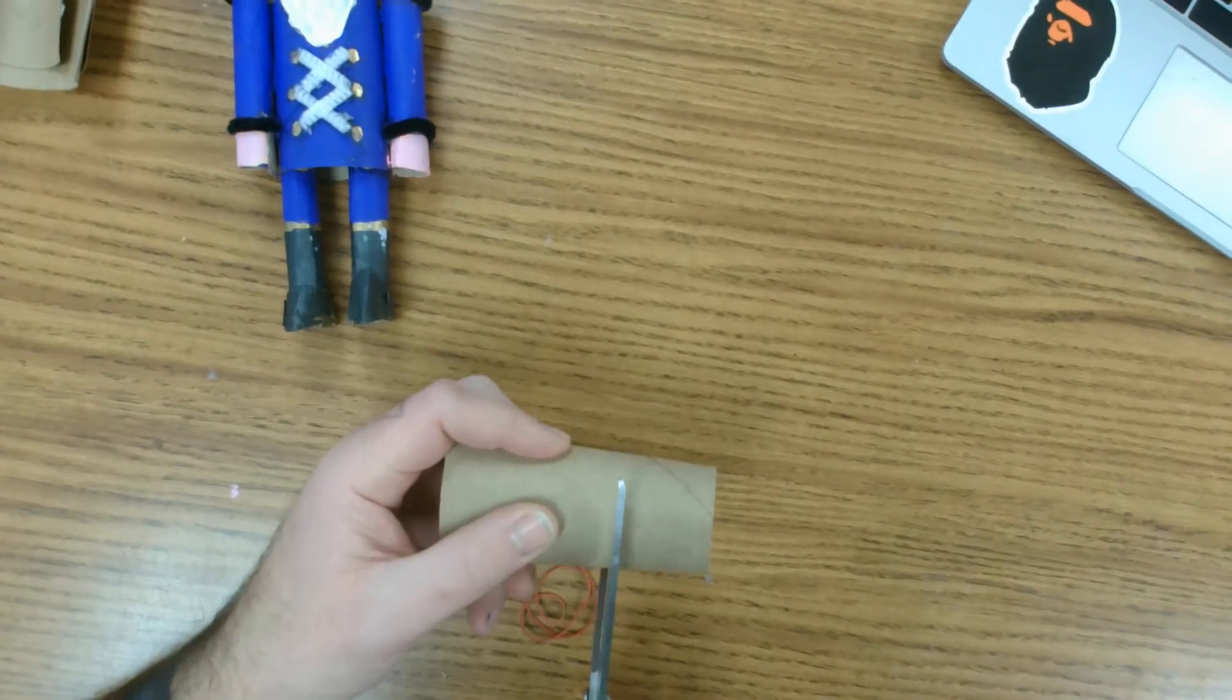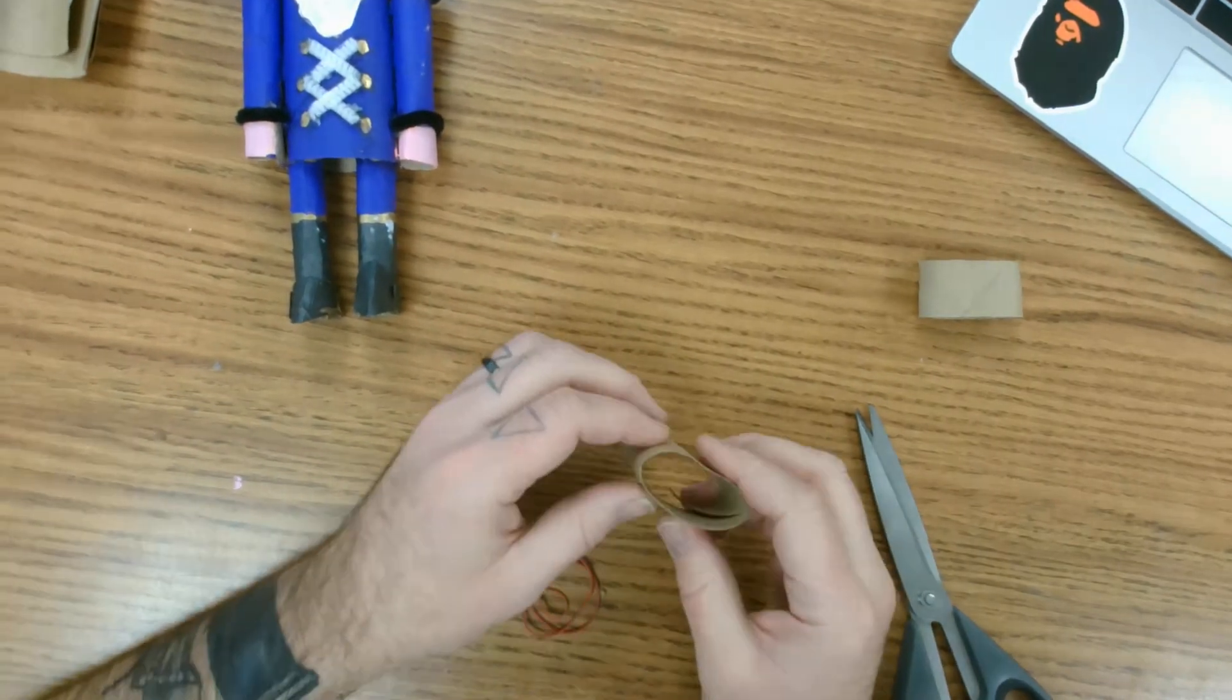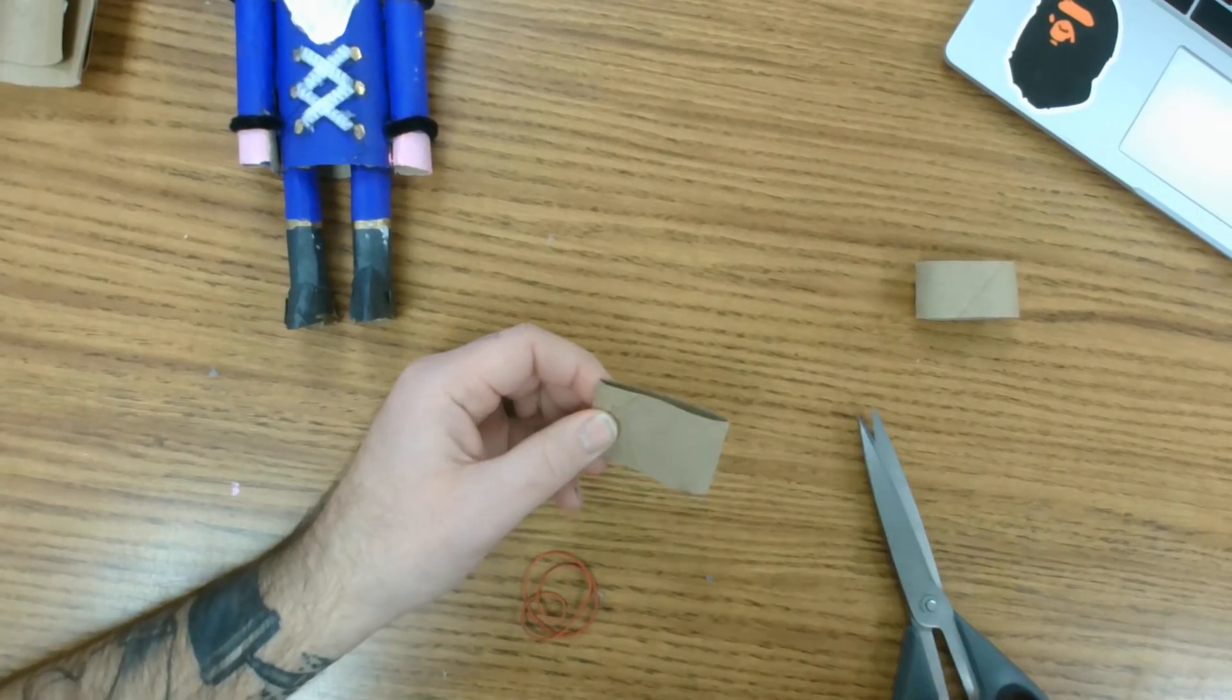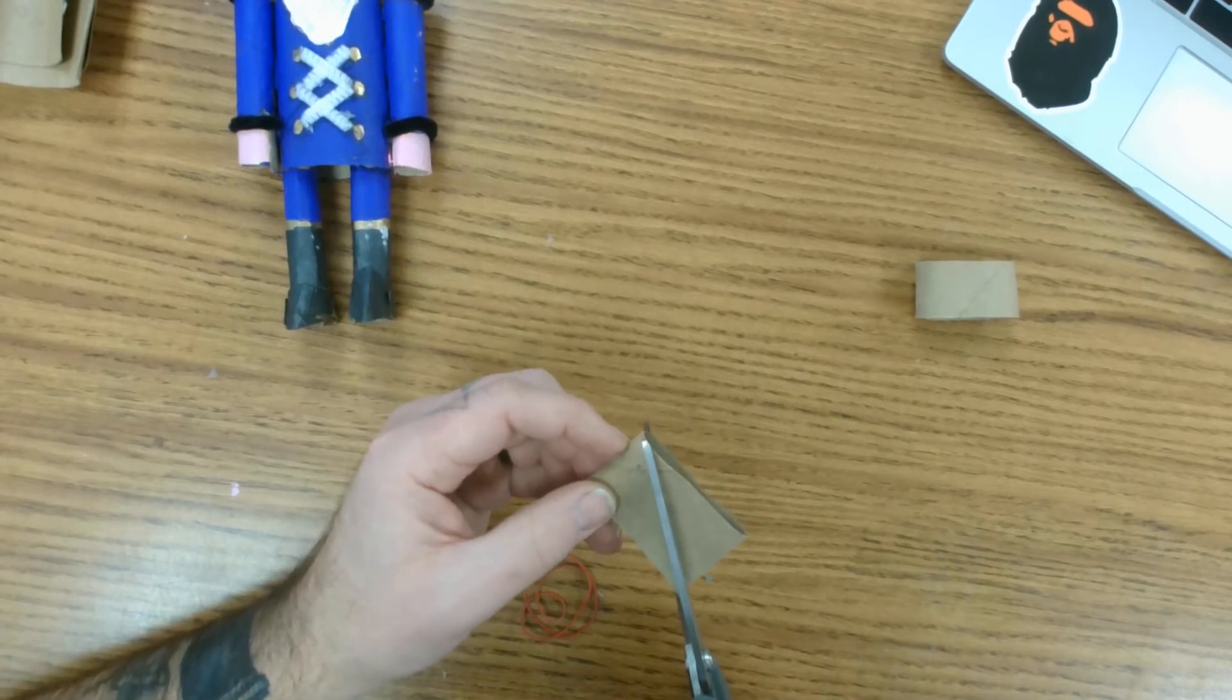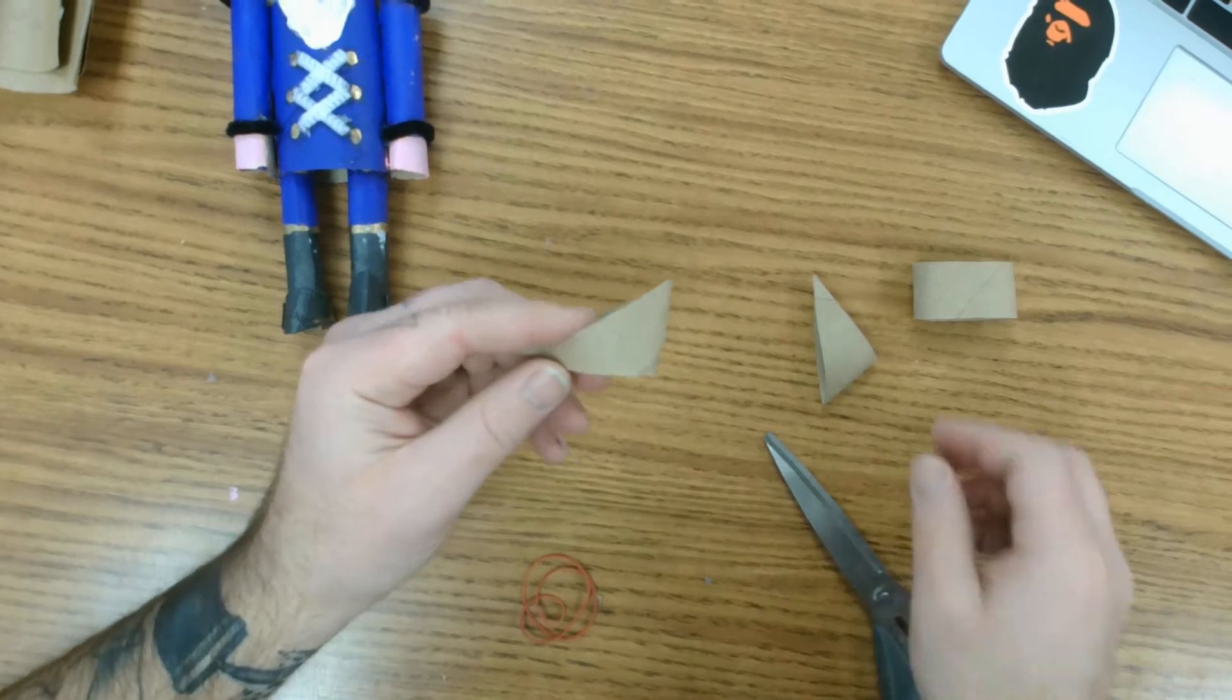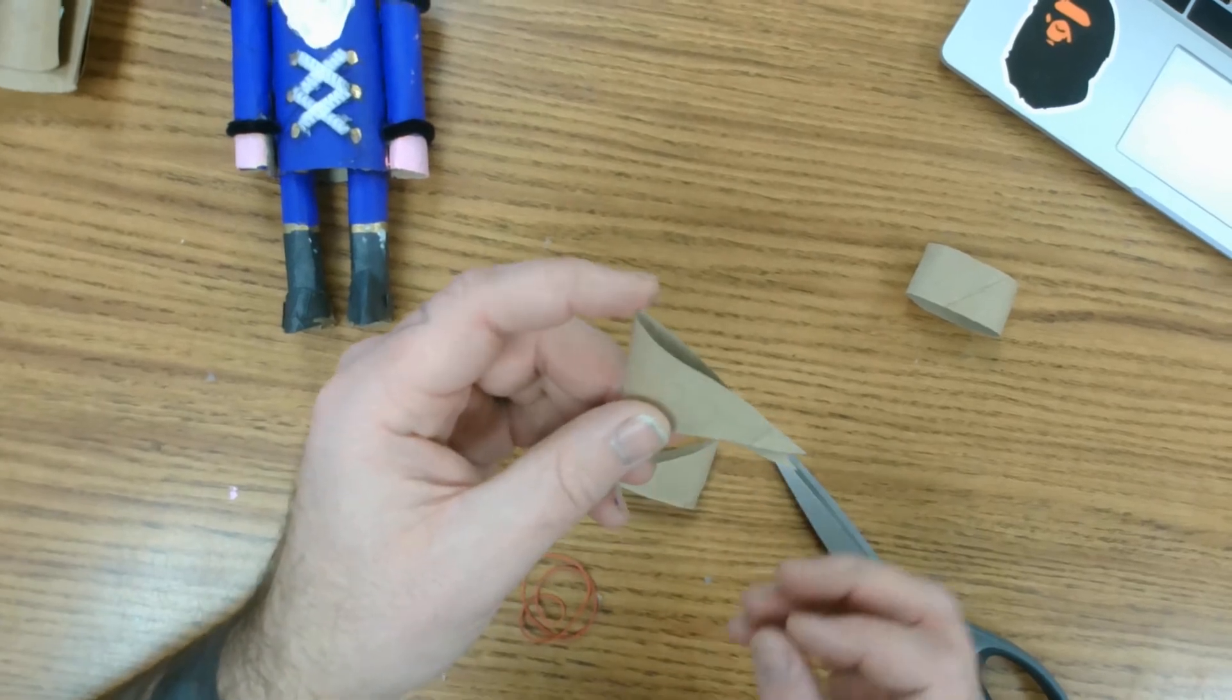To do that, you're actually going to take just an extra toilet paper tube, and one tube should outfit a few students. The first thing I'm going to do is cut a ring about this size, and then I'm going to cut it diagonally. That's going to give me two shapes like this and that.